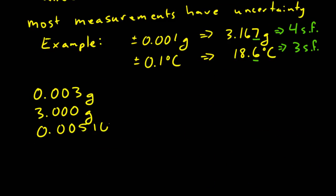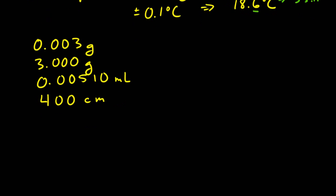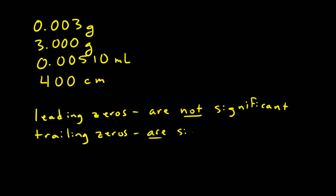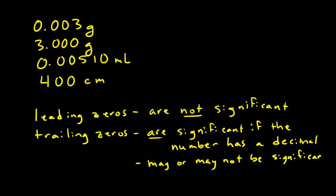We have two types of zeros: leading zeros and trailing zeros. Leading zeros are all of the zeros out at the front of the number before the first non-zero digit. We say that leading zeros are not significant since they help us locate the decimal point. Trailing zeros are all of the zeros that come at the end of a number. We say that trailing zeros are significant if the number has a decimal, and that they may or may not be significant if the number has no decimal.